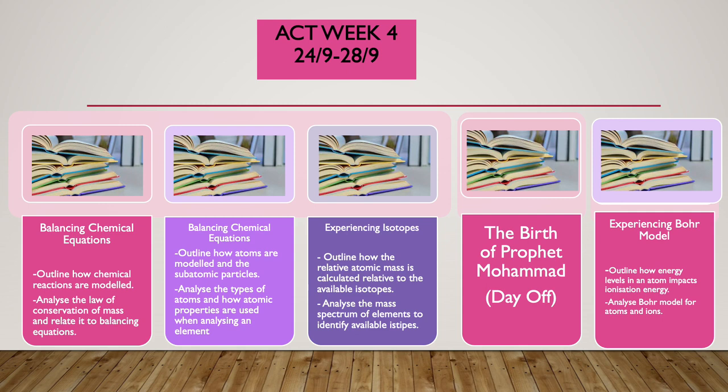And finally, on the 28th we will explore the Bohr model. We will do this by outlining how energy levels in an atom impact the ionization energy, which is the minimum amount of energy required to remove an electron from a gaseous atom to make it a gaseous ion. We will also analyze the Bohr model of atoms and ions — cations and anions — and differentiate between the terms neutral and stable for each.